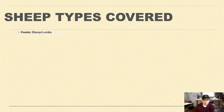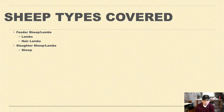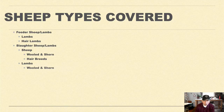Sheep types covered: feeder sheep and lambs, lambs, hair lambs, slaughter sheep and lambs, sheep — wool and shorn, hair breeds, lambs — wool and shorn, hair lambs.